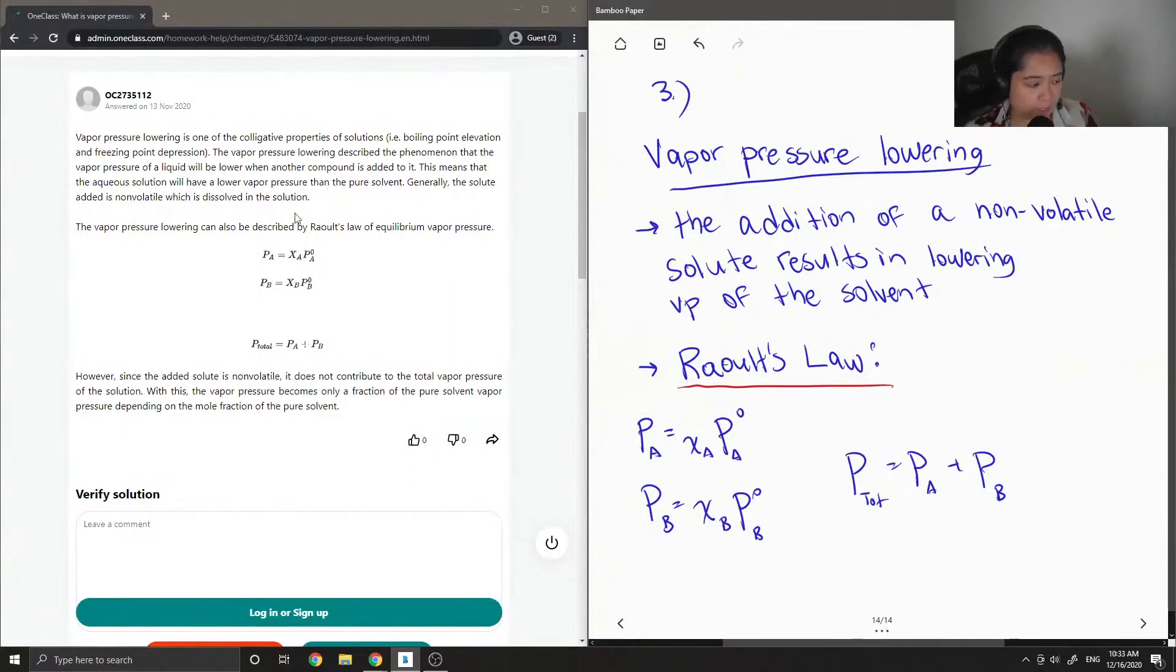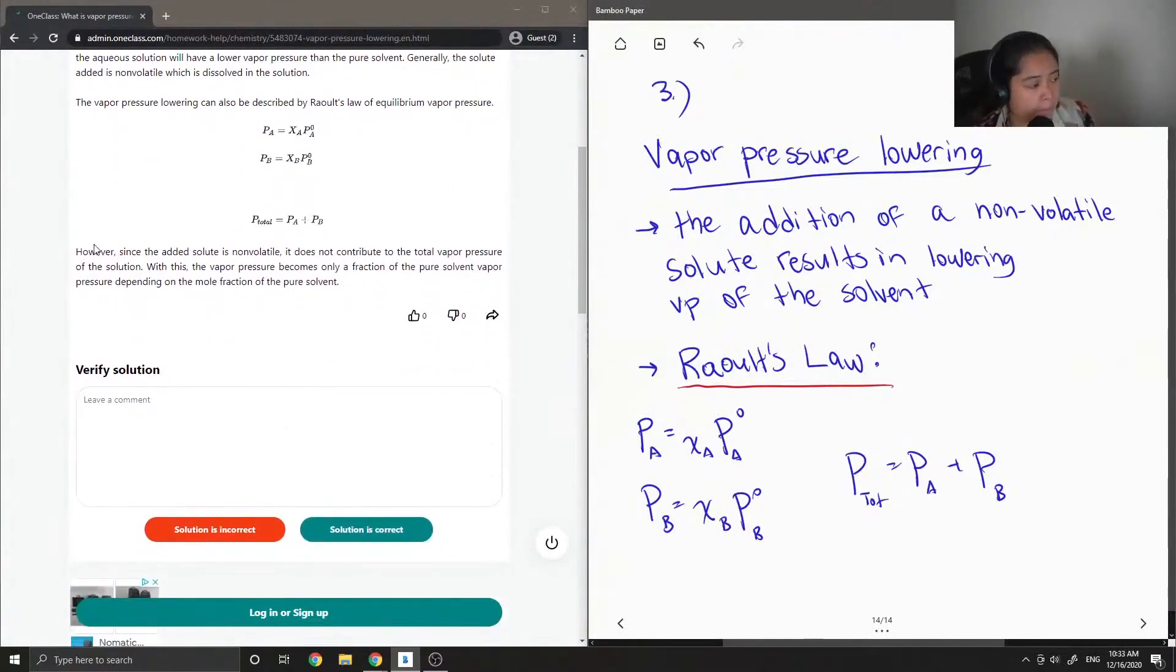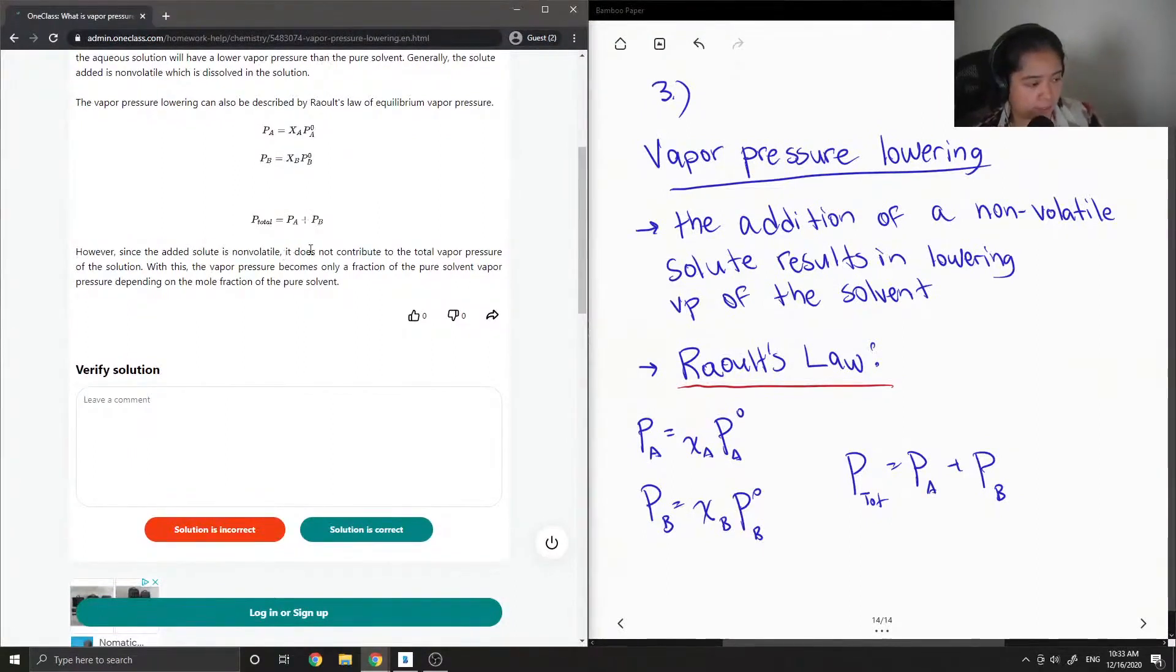And then P total is just equal to Pa plus Pb. However, since the added solute is non-volatile, it does not contribute to the total vapor pressure of the solution. With this, the vapor pressure becomes only a fraction of the pure solvent vapor pressure, depending on the mole fraction of the pure solvent.